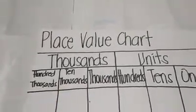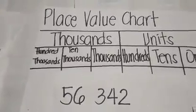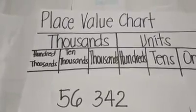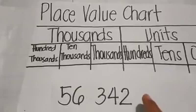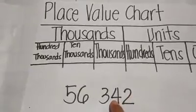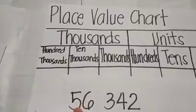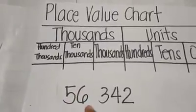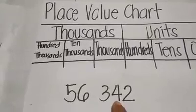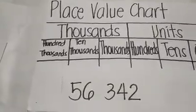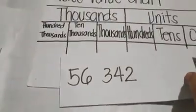Let's take the number 56,342. This number has 5 digits: 1, 2, 3, 4, 5. Again, 56,342 has 5 digits. Now, it is important that you know their placement in our place value chart.